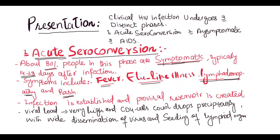Presentation: Clinical HIV infection undergoes three distinct phases — acute seroconversion phase, asymptomatic infection phase, and AIDS.